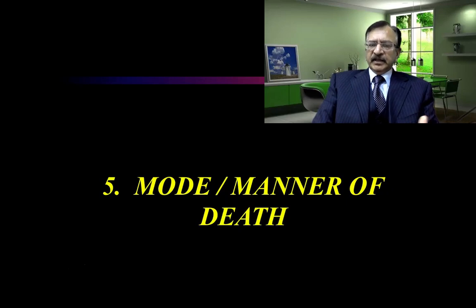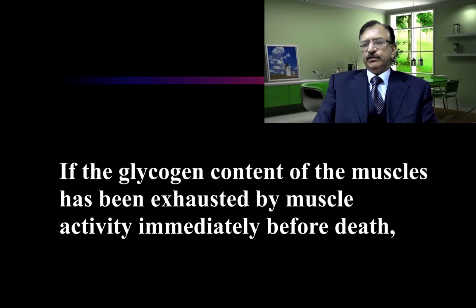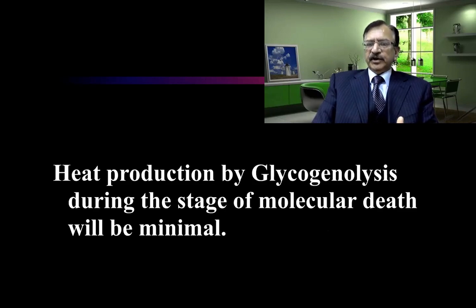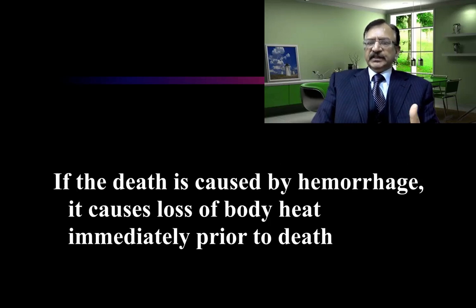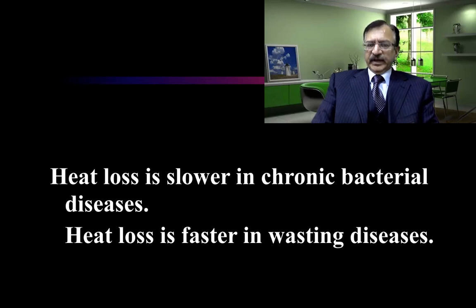Regarding the mode or manner of death: if the glycogen content of the muscle has been exhausted by muscle activity immediately before death, then heat production by anaerobic glycogenolysis during the stage of molecular death will be minimal. If the death is due to hemorrhage, it causes loss of body heat immediately prior to death, so the body will cool early. Heat loss is slower in chronic bacterial diseases, whereas heat loss is faster in wasting diseases.